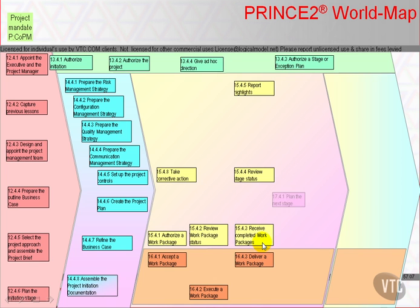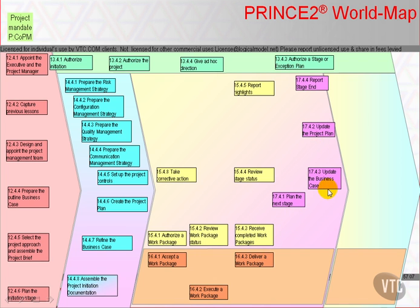Eventually, the cycle of the stage results in plan the next stage, update the Project Plan and the business case — these three activities are probably concurrent and iterative — and then report stage end.